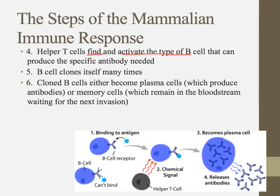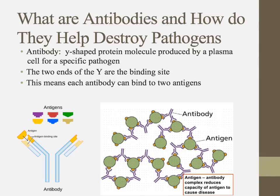We have thousands of different B cells. The helper T cell finds the right one, activates it, and that B cell clones itself many times. From there, one of two things happens: the cloned B cell either becomes a plasma cell — which produces the antibodies — or it becomes a long-lived memory cell that remains in the bloodstream to prepare for the next invasion. Since plasma cells produce a protein, we'd expect them to have lots of ribosomes and rough ER.